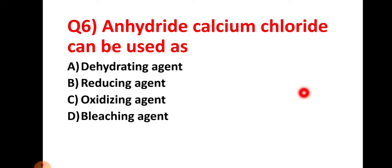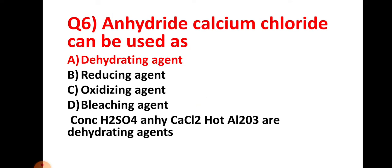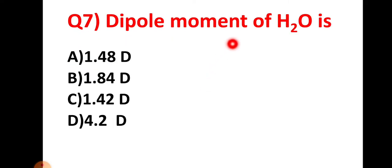Question number six: anhydrous calcium chloride (CaCl2) can be used as — option A: dehydrating agent, option B: reducing agent, option C: oxidizing agent, option D: bleaching agent. Concentrated H2SO4, anhydrous calcium chloride, and hot Al2O3 are all used as dehydrating agents, so option A is the right answer.